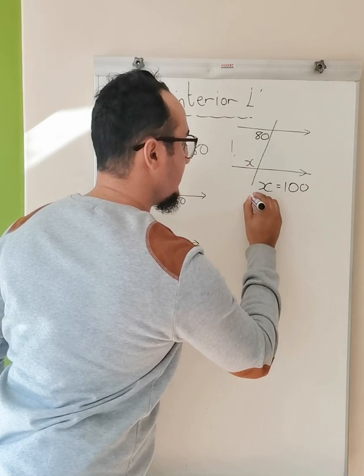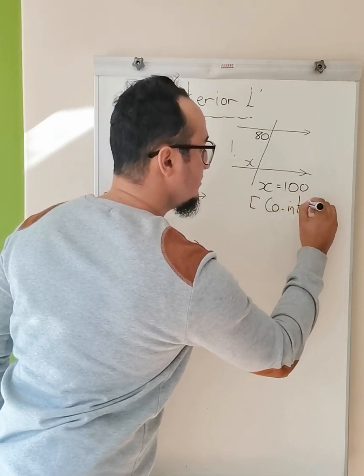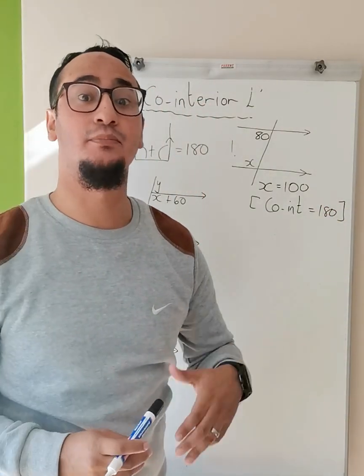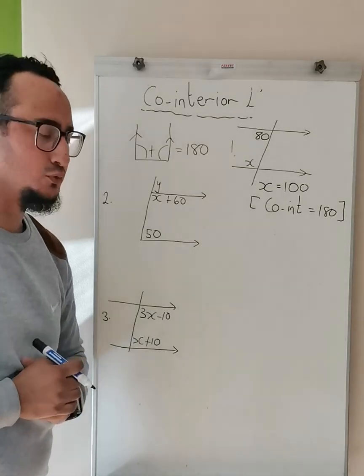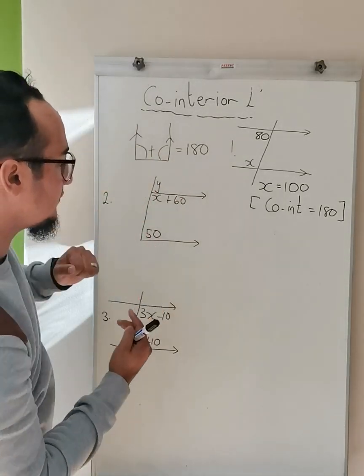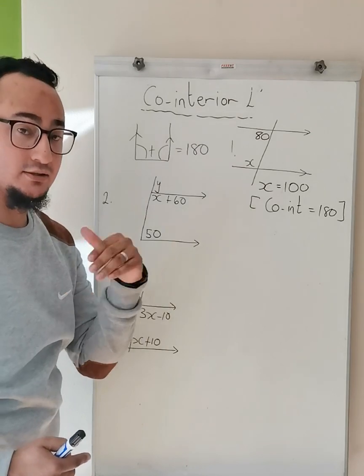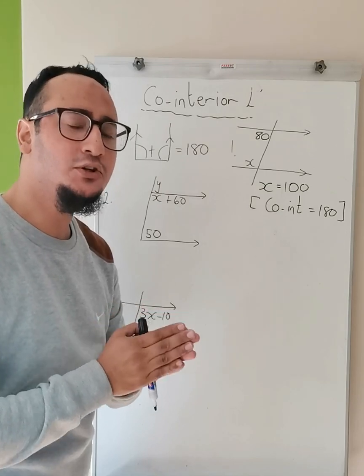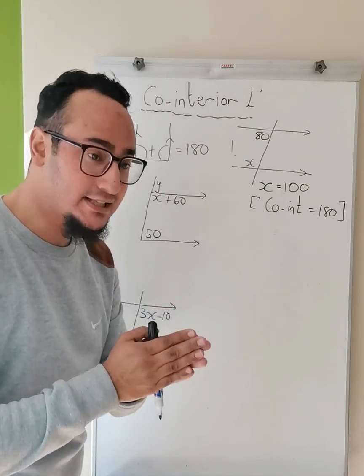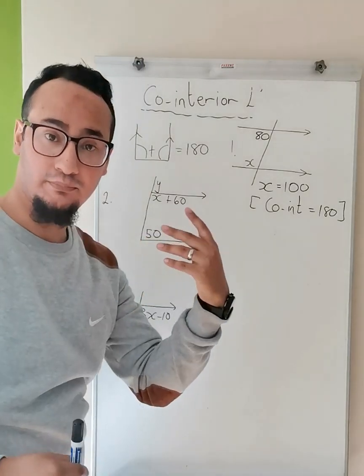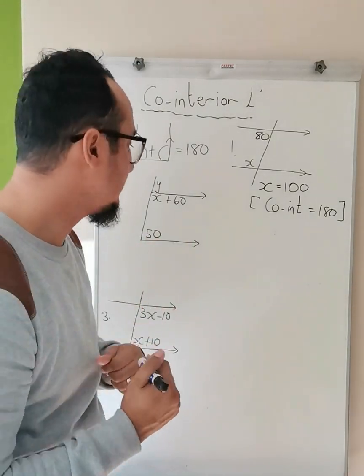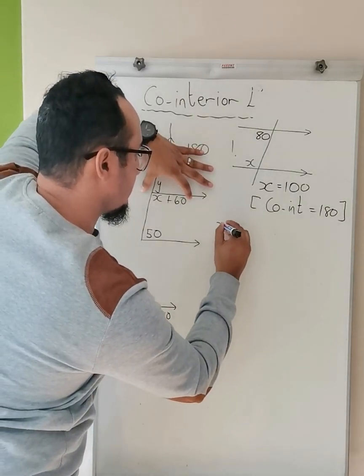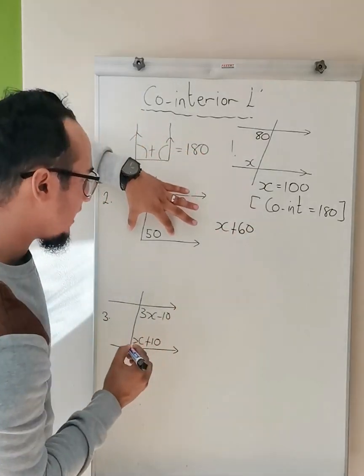Let's go on to Example 2. So there's my parallel lines. On the inside of them, you'll find x + 60 and you'll have 50. Now we are going to solve for x, meaning we need to know the rule that says inside of my parallel lines, they are supplementary. So the one angle, no matter how it looks, is x + 60 plus the other angle...